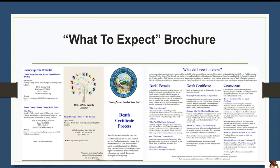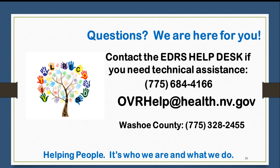This is the What to Expect brochure, a tri-fold created by the Office of Vital Records to provide a summary of the death certificate process, including burial permits, the death certificate itself, and corrections. We have provided information for counties as well as the state level. This will be a valuable asset to provide to families during this difficult time. If you would like a PDF of the brochure, please email OVR Help and we will be happy to send it. Please contact the EDRS Help Desk for technical assistance — you may call or email us at ovrhelp@health.nv.gov. We also include Washoe County's number as well. Thank you so much for watching.